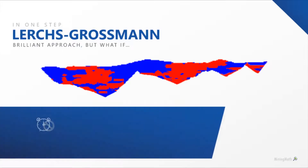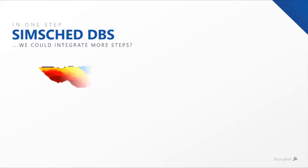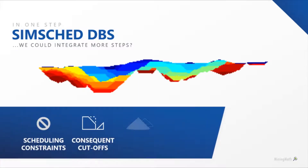The Lerchs-Grossmann algorithm was a brilliant approach for its time. However, it considers that all material is extracted at once, disregarding the time. The destination of each block needs to be predefined without the overall optimization criteria, and the results are not practical, as they generate cone-shaped pits. Also, it's based on block precedences, which incur approximation errors on slope angles. Nevertheless, for decades, it has been a brilliant approach.